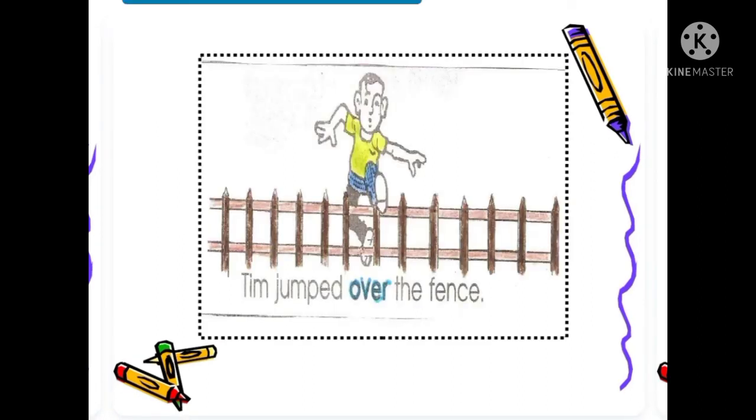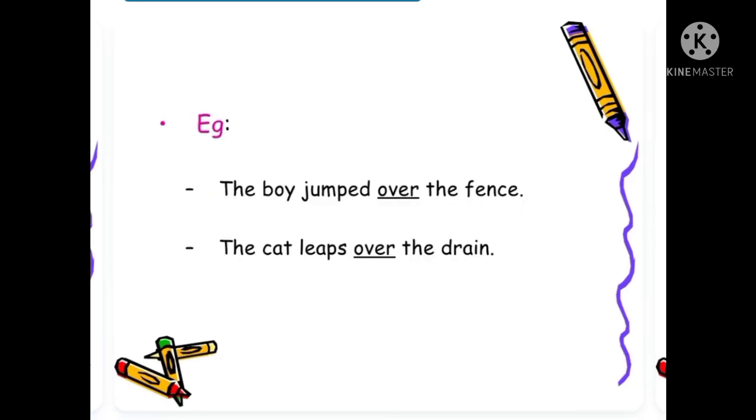Tim jumped over the fence. Another example: the boy jumped over the fence. The cat jumps over the drain.